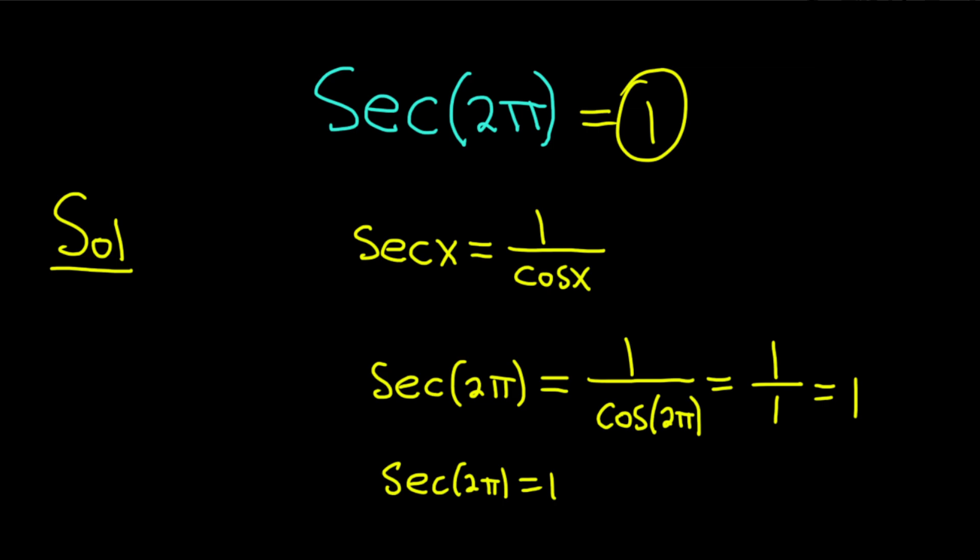So the secant of 2π is equal to 1. Hopefully this video has been helpful to someone out there in the world. Good luck.